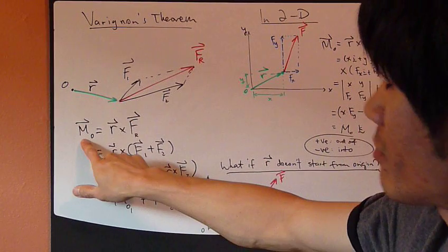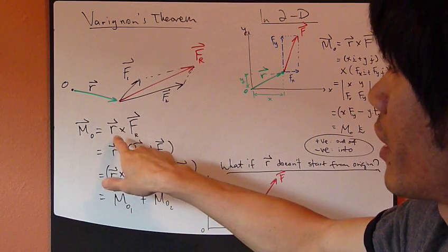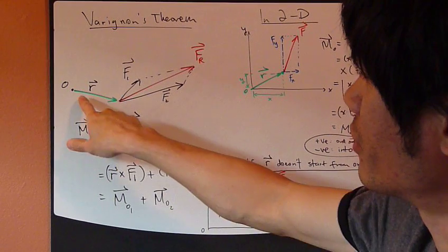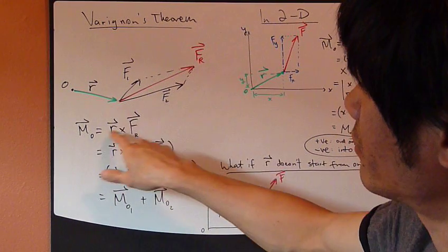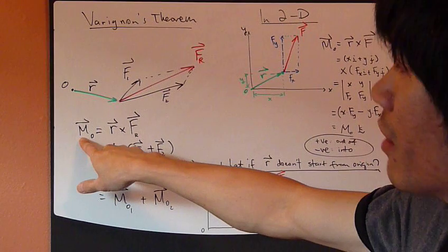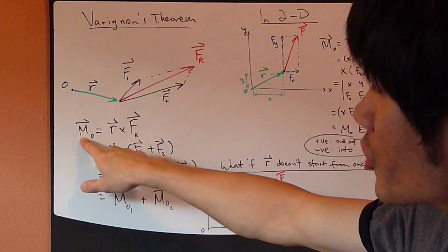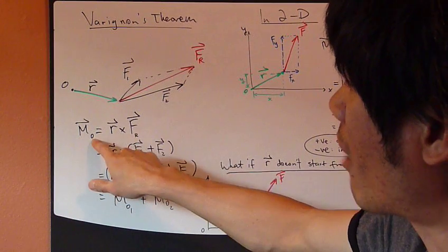So what I do is just take a cross product between this R vector and this Fr. This is exactly the moment created by this Fr about point O.